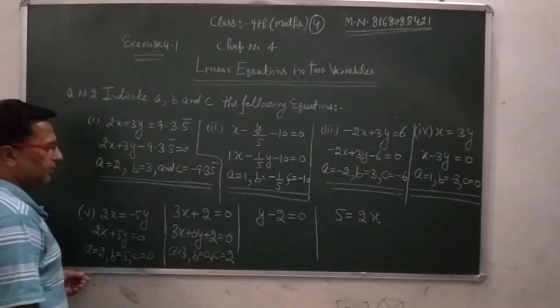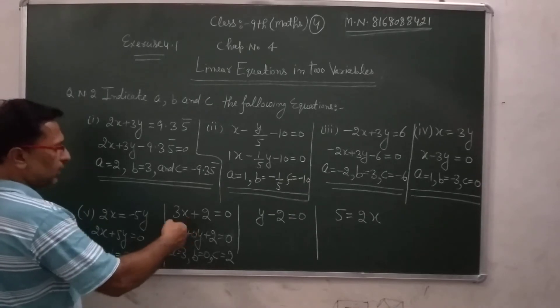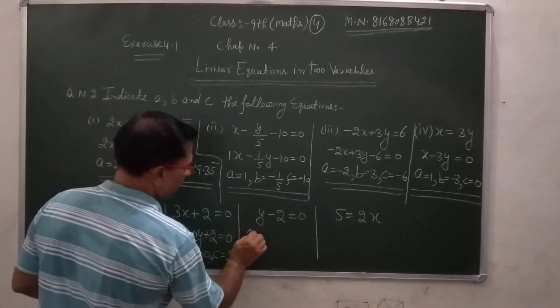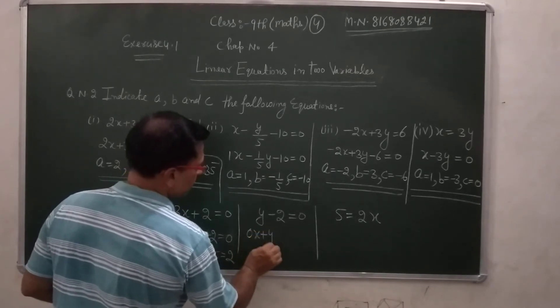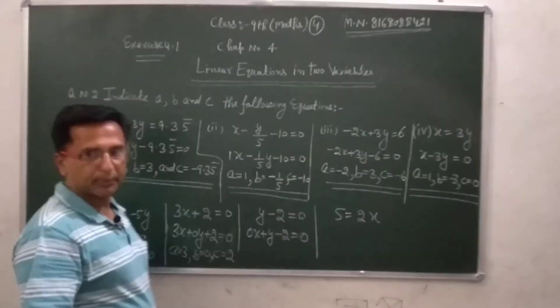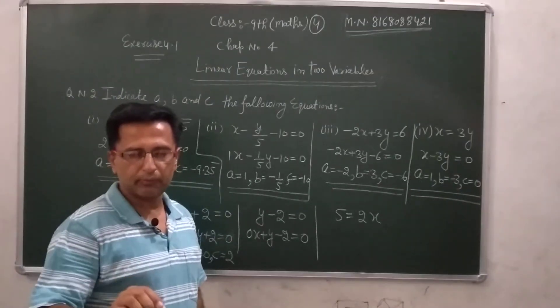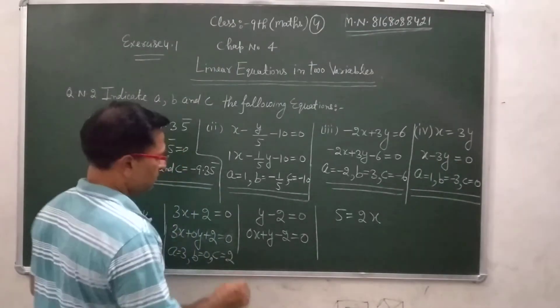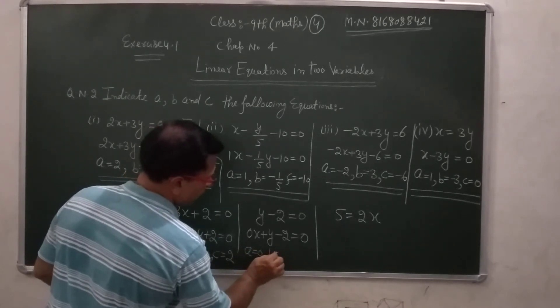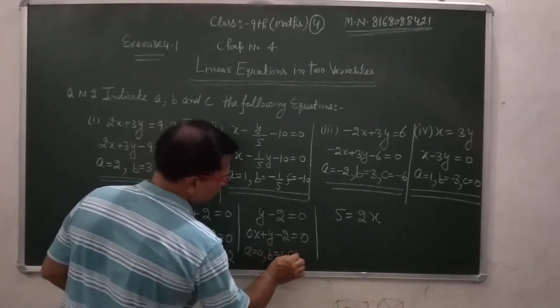A is equal to 0. So, this is equal to 2 variables. This is equal to 0. A is equal to 0, B is equal to 1, C is equal to minus 2.